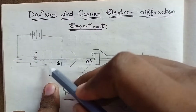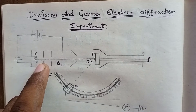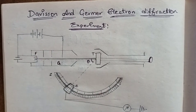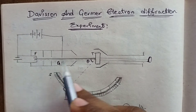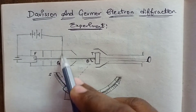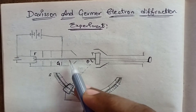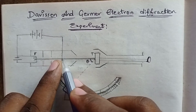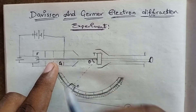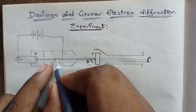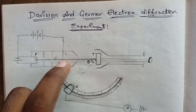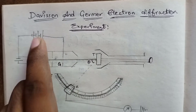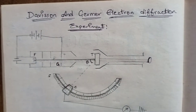The electrons pass through slits to produce a narrow beam. If we have two slits, we apply a positive potential. The electrons, being negatively charged, are accelerated toward the positive charge. This accelerates the electrons and gives them high speed, explained by the potential difference.